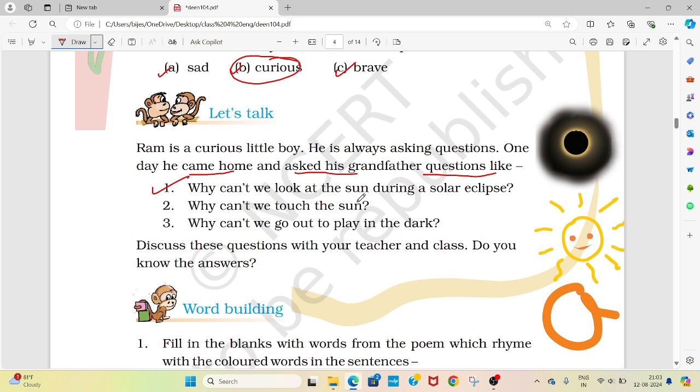Why can't we look at the sun during a solar eclipse? Why can't we touch the sun? Why can't we go out to play in the dark? These are some questions that boy Ram wants the answer of these questions from his grandfather. So you should discuss these questions with your parents, your friends, and try to find out their answers. Discuss these questions with your teacher and class, do you know the answers?